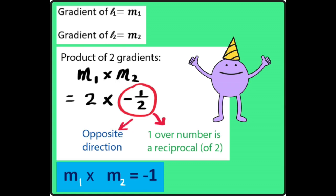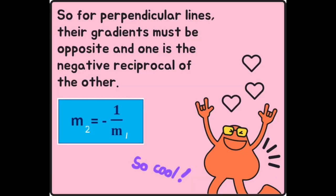From negative half, we can tell negative means it's opposite direction. Half is 1 over 2, which is a reciprocal of 2. So for perpendicular lines, their gradients must be opposite, and one is the negative reciprocal of the other. Like this formula: M2 equals negative 1 over M1, which is a 2.